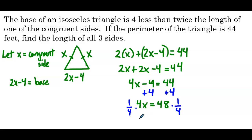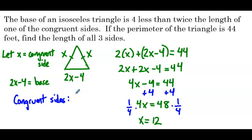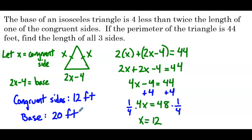We get x equals 12. The problem wants the length of all three sides. The congruent sides each measure 12 feet. Then the base is 2 times 12, which is 24, minus 4, which is 20. So the dimensions of this triangle are two sides with length 12 and a base of length 20.